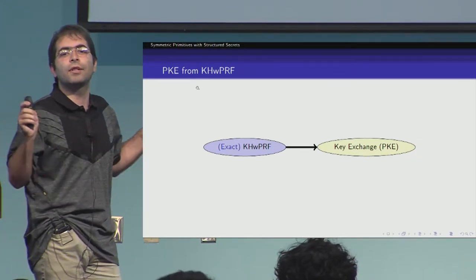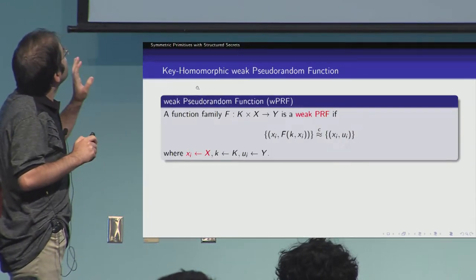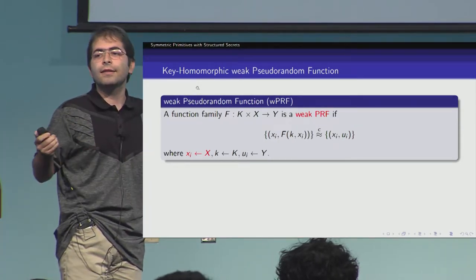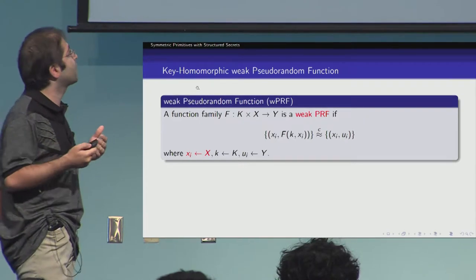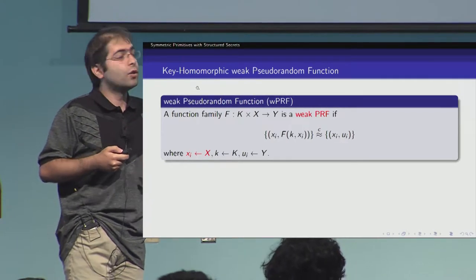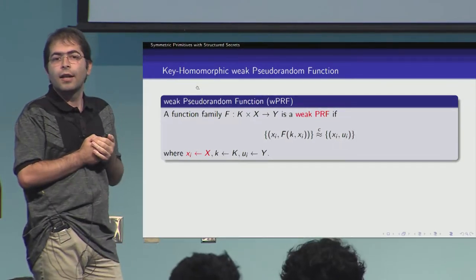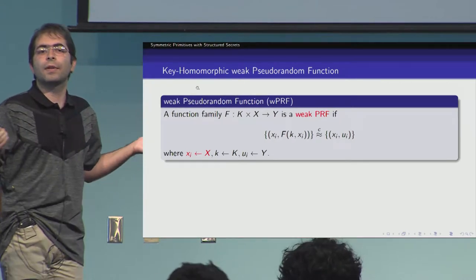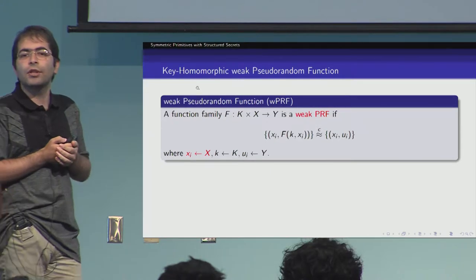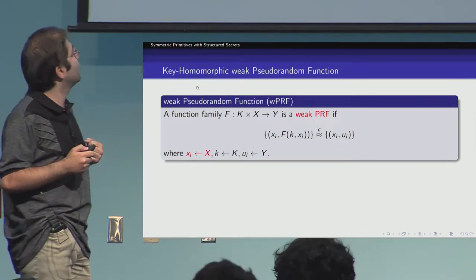I'm also going to recall some definitions needed for this result. We say that a function family is a weak PRF if an attacker cannot distinguish between samples of the form (Xi, F_K(Xi)) from (Xi, Ui), where the Uis are chosen uniformly from the output space of the weak PRF. This is a weaker version of a plain pseudo-random function, where an attacker sees function evaluations on only randomly chosen inputs instead of adaptively chosen inputs.